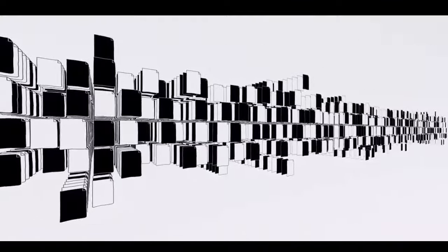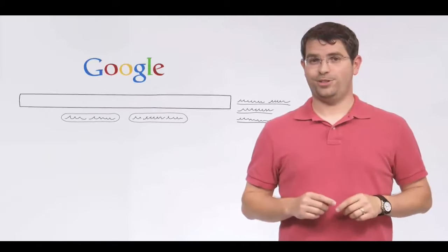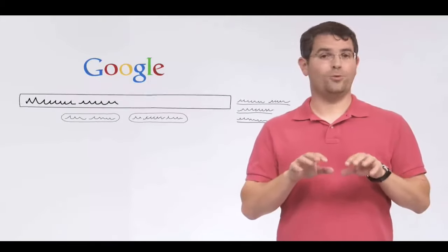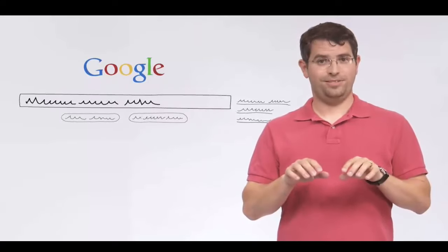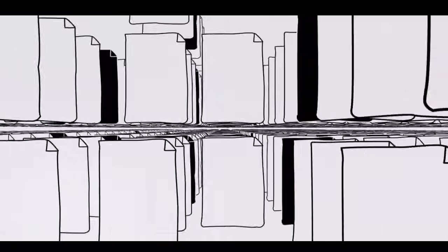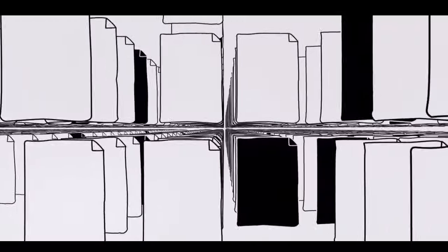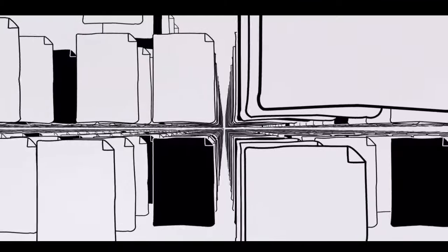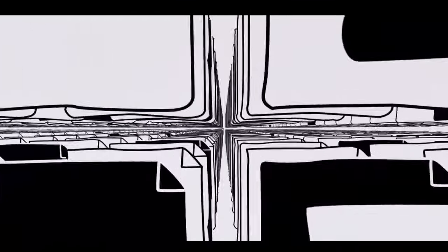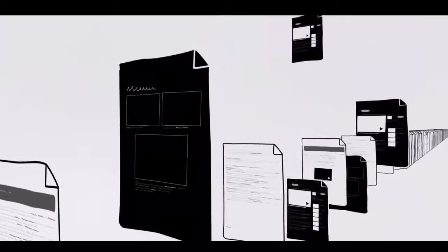Many billions of pages are stored across thousands of machines. Suppose I want to know how fast a cheetah can run — I type in my search, say 'cheetah running speed', and hit return. Our software searches our index to find every page that includes those search terms. In this case, there are hundreds of thousands of possible results. How does Google decide which few documents I really want?